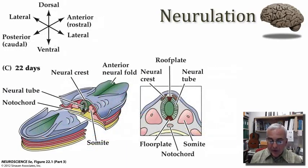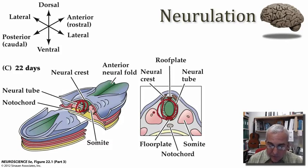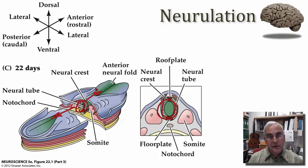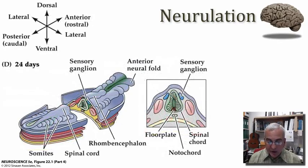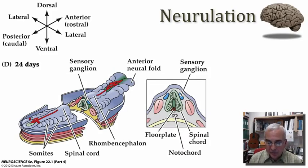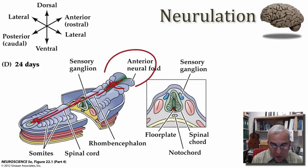The neural tube has closed off underneath this overlying ectoderm. There is a progressive closure of the neural tube that begins near the center and then extends out into the anterior and posterior directions. Now well into the fourth week of embryonic life, we have the anterior end and the posterior end of this developing neural tube progressively closing. The anterior end of this developing neural tube is going to form the brain, and the rest of its length, all the way down to the posterior tip, is going to form the spinal cord.